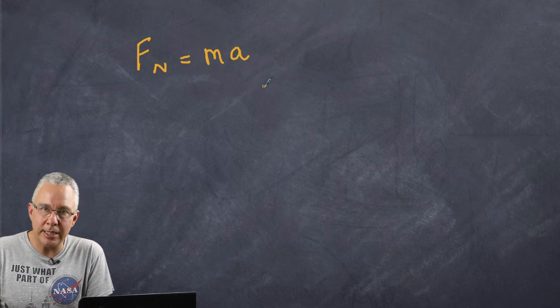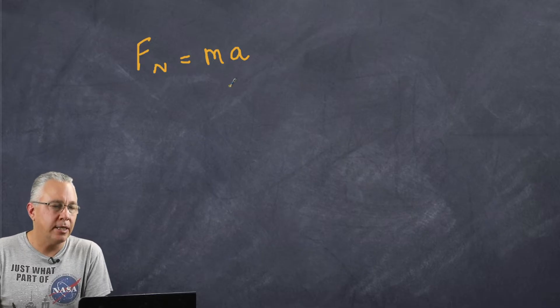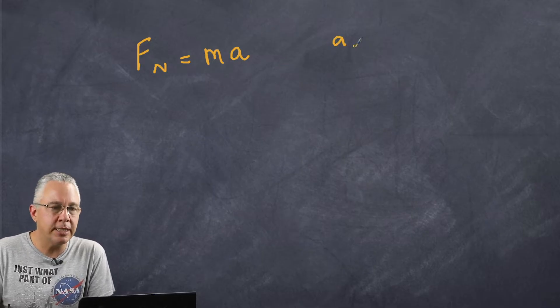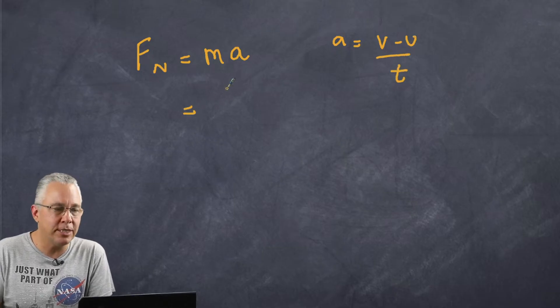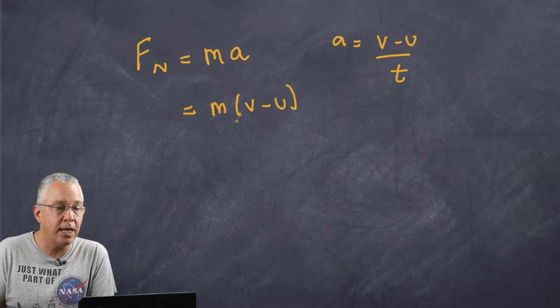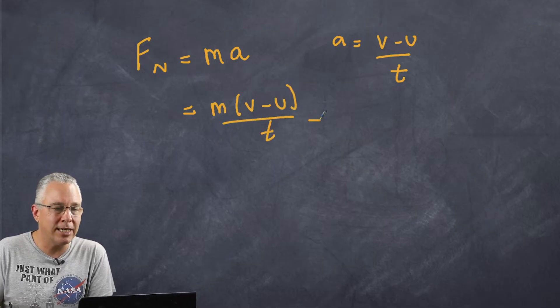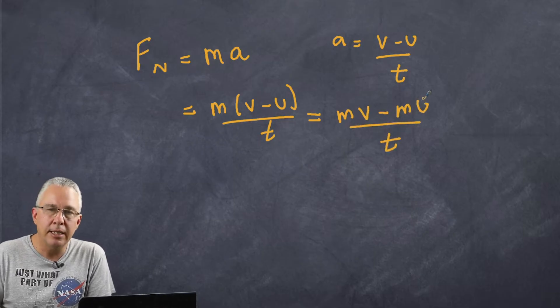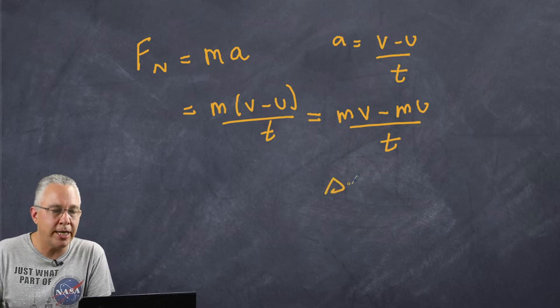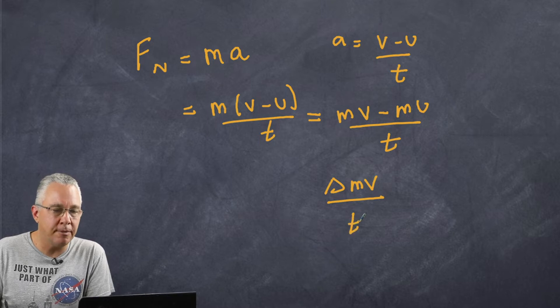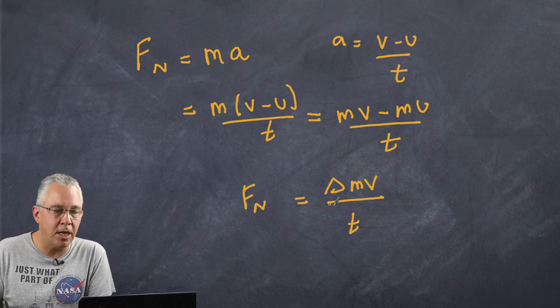But let's see how we can look at this from the way that Newton looked at it. Now we know that the acceleration is equal to the change of velocity with respect to time. So if I put that into this equation here I'm going to get M outside of V minus U over T. And of course I can clean that up - I'm going to get MV minus MU over T. Now can you see here what I have on the numerator? I have what we call the change in momentum. So the change in momentum over time is equal to the net force being applied.